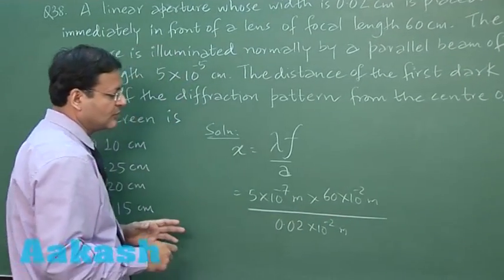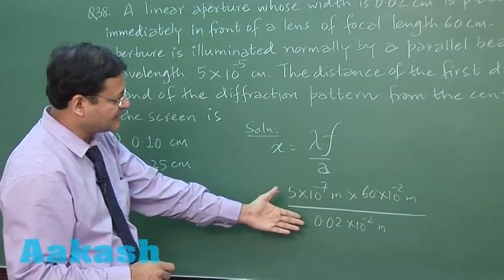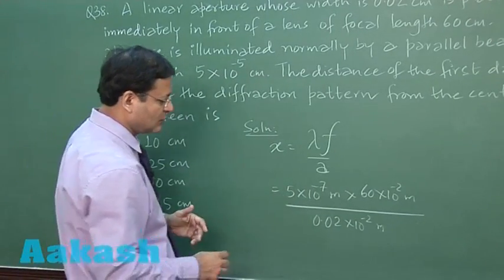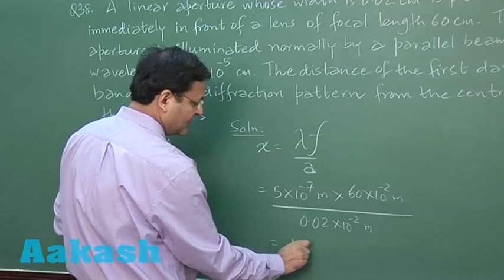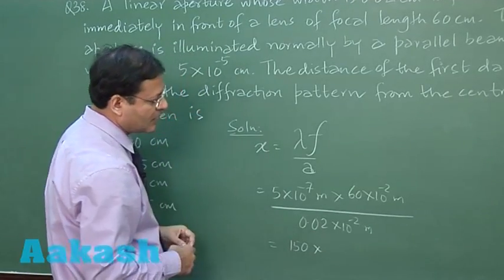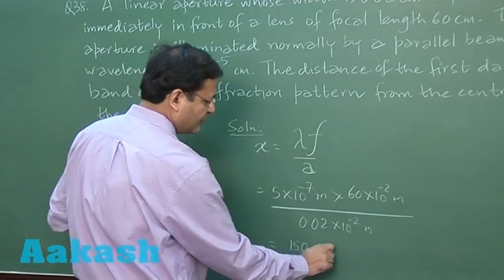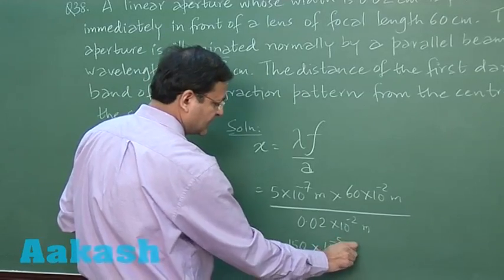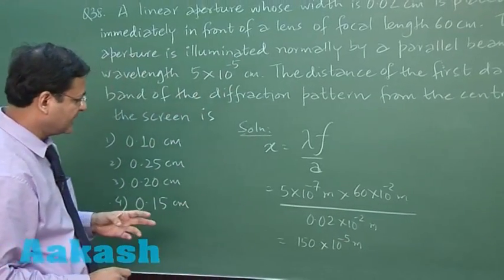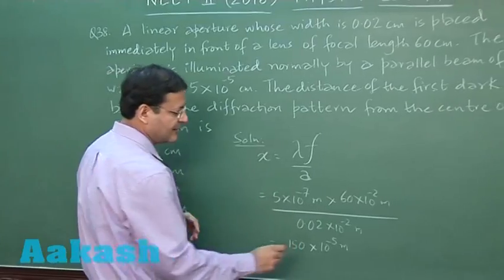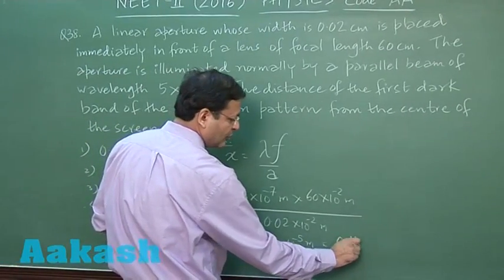So in total you will find that this is minus 9 minus 4 minus 5. So 150 into 10 to the power minus 5 meter, so ultimately it comes out to be 0.15, 0.15 centimeter.